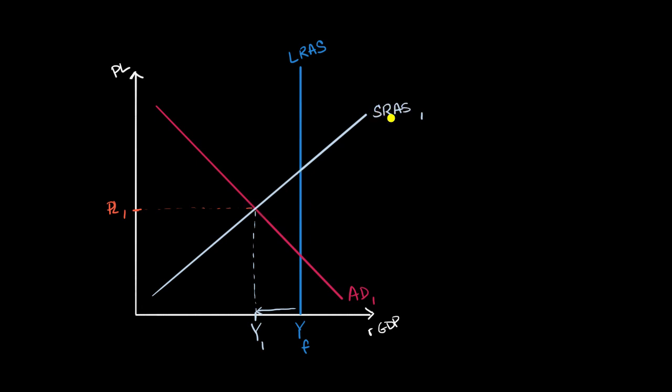And maybe our short-run aggregate supply curve shifts down over time, and we get to a state something like this, and in that case, this would be our short-run aggregate supply curve two, and all of a sudden we would be at a long-run equilibrium where our equilibrium output is equal to our full employment output.